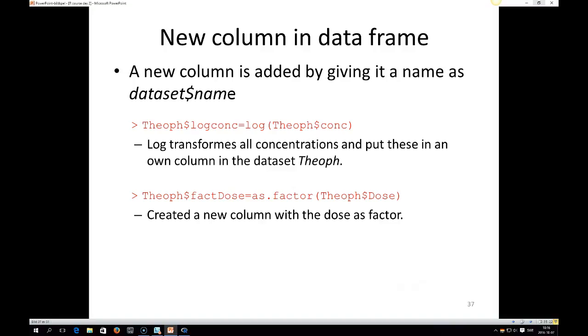If you want to add a new column in the data frame, you give it a name with the dataset and then you put dollar sign and then you put the name you want of that column. So you put the dataset where you want to put this column in, dollar sign, and then the name. So if you would like to add a column into the Theoph dataset with the log concentration, you could write like this: